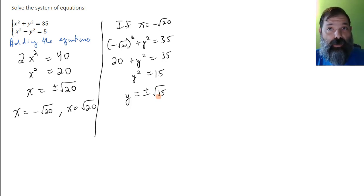So if x is negative root 20, y can be either negative root 15 or positive root 15.